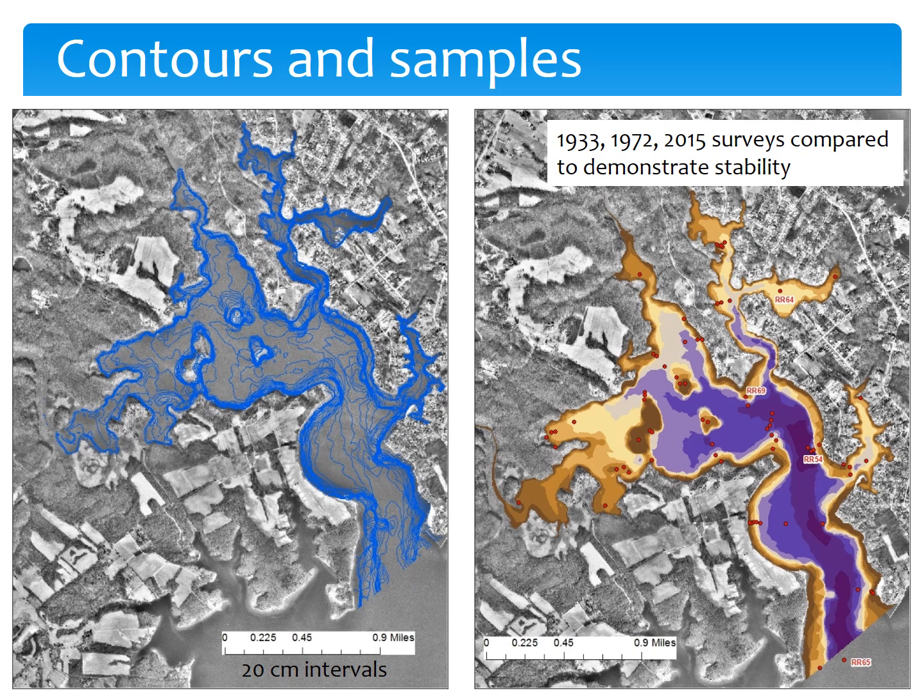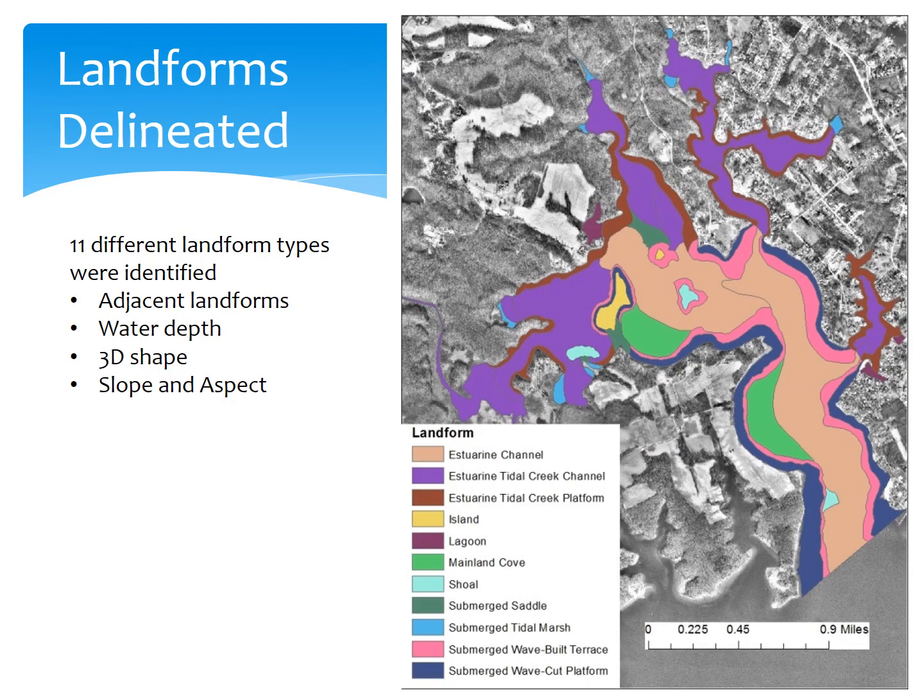So from that, we delineated 11 different landform types using adjacent landforms such as cliffs or wetlands. We looked at water depth, the 3D shape of the landforms, and the slope and aspect. Aspect is important here because of fetch, which is the distance that wind can blow across water to build up wave energy before it crashes into a landform.